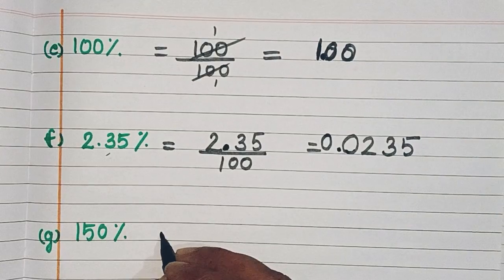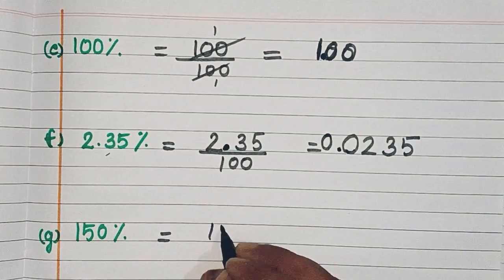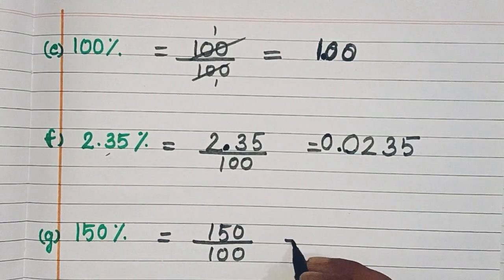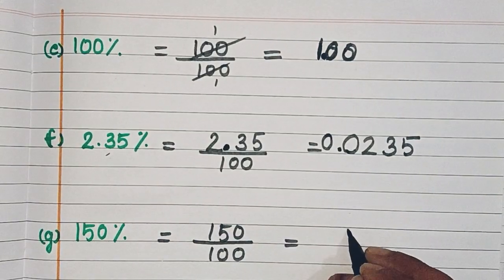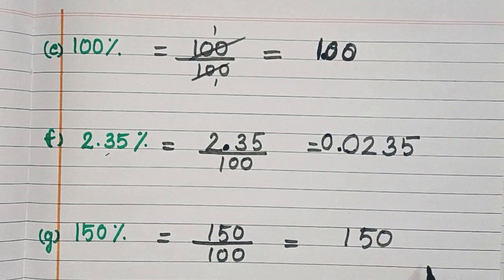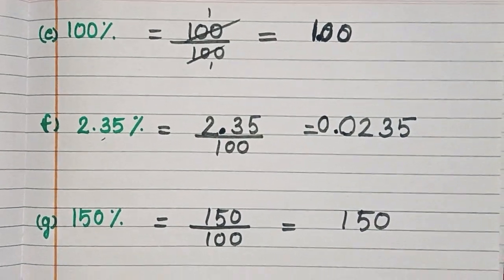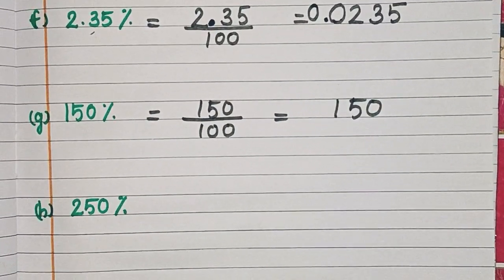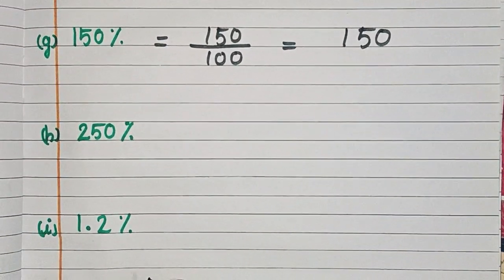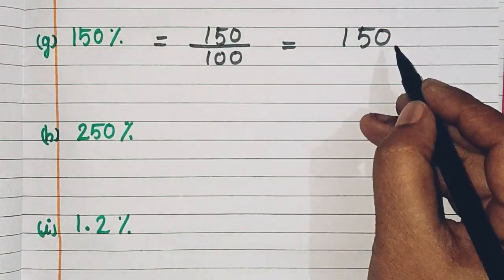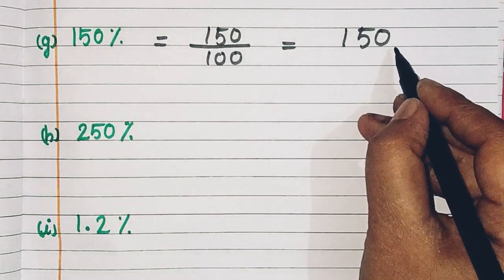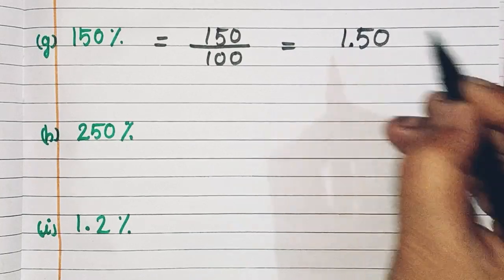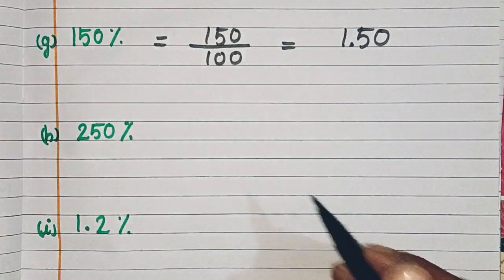Now next is 150 upon 100. This is 150 — there is no decimal point in 150. When a number has no decimal, the decimal is assumed to be at the end. So we move 1, 2 places forward and it becomes 1.50, your decimal.